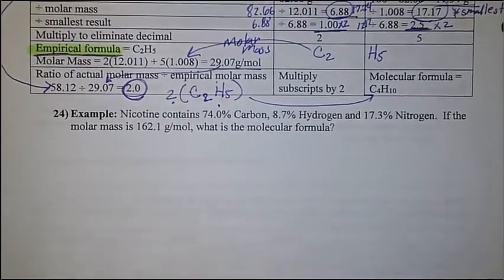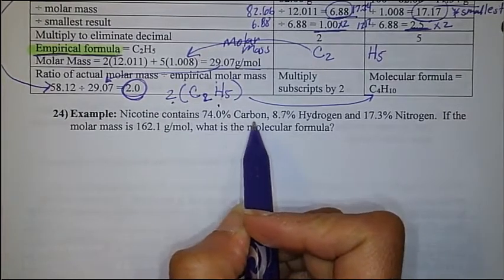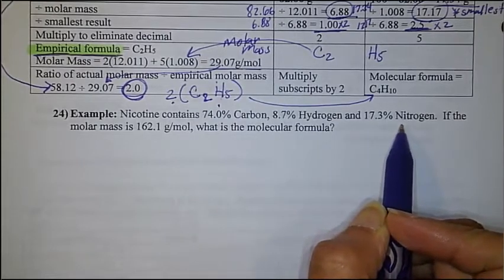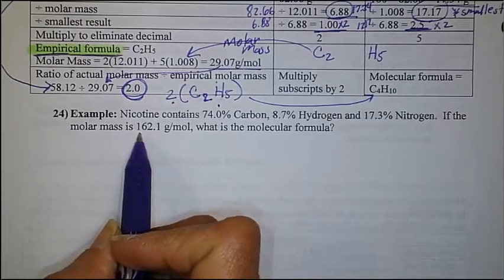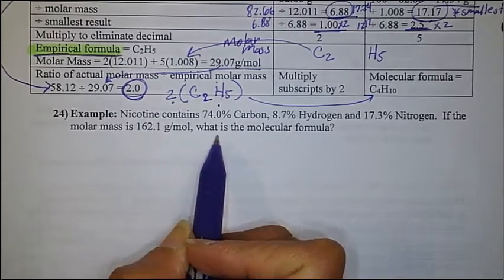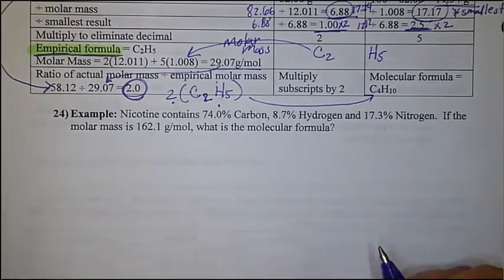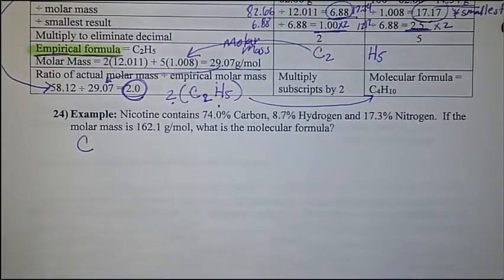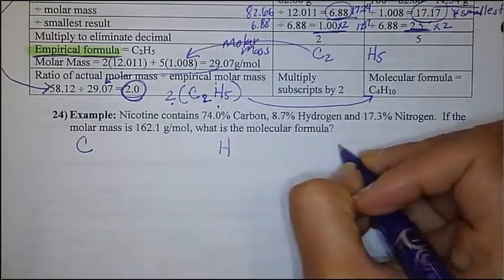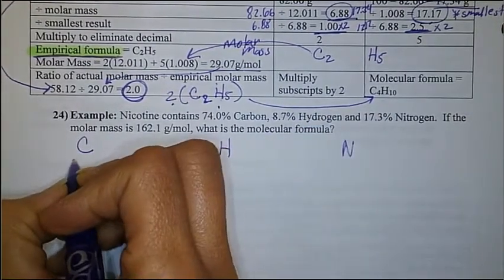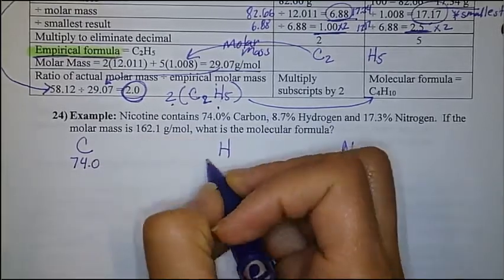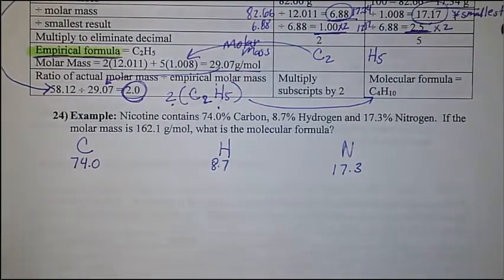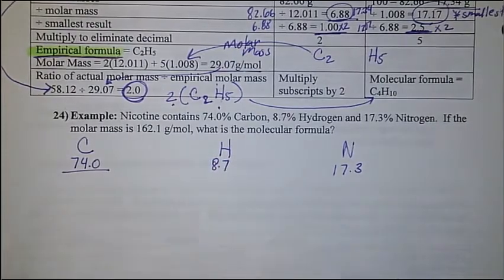We've got here nicotine contains 74.0% carbon, 8.7% hydrogen, and 17.3% nitrogen. If the molar mass is 162.1 grams per mole, what is the molecular formula? So we're going to get started. We have carbon: 74.0 grams; hydrogen: 8.7 grams; and nitrogen: 17.3 grams. We're going to take each one and divide it by its molar mass.